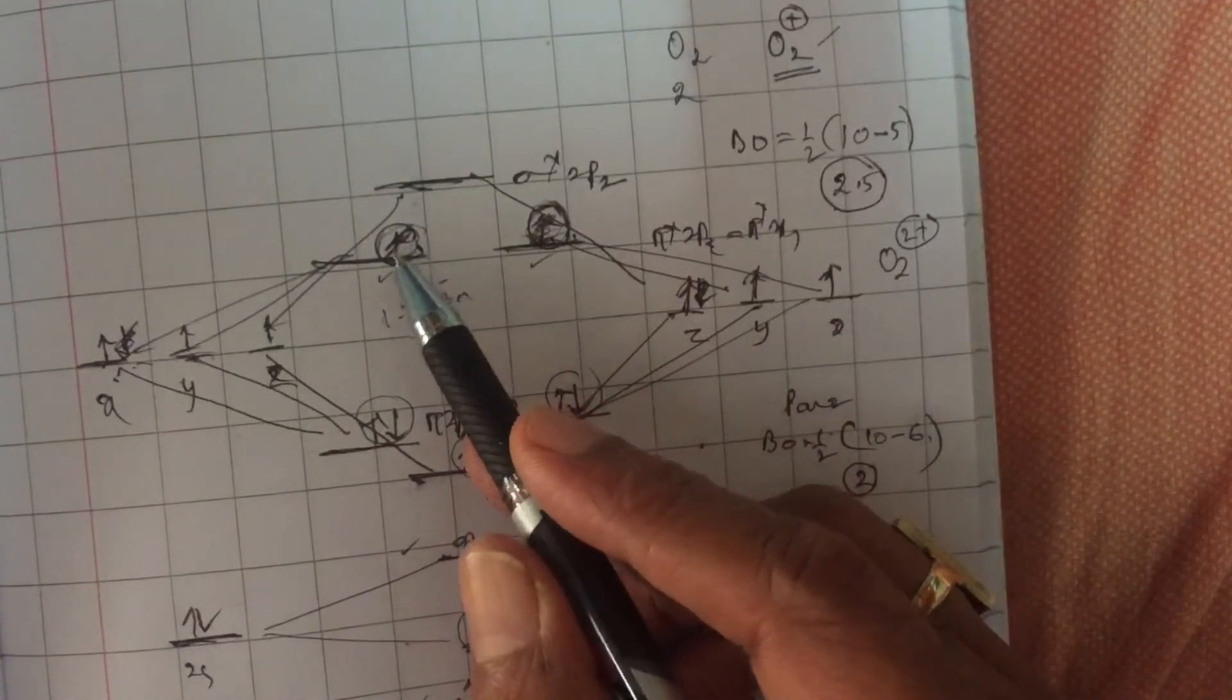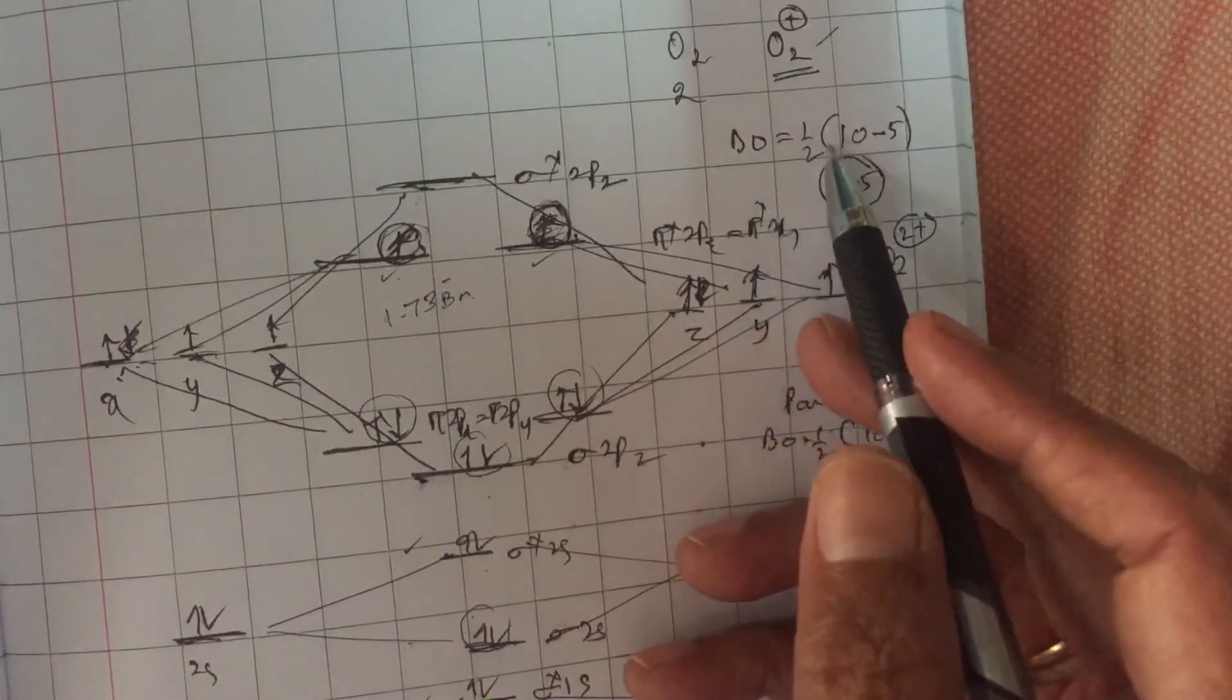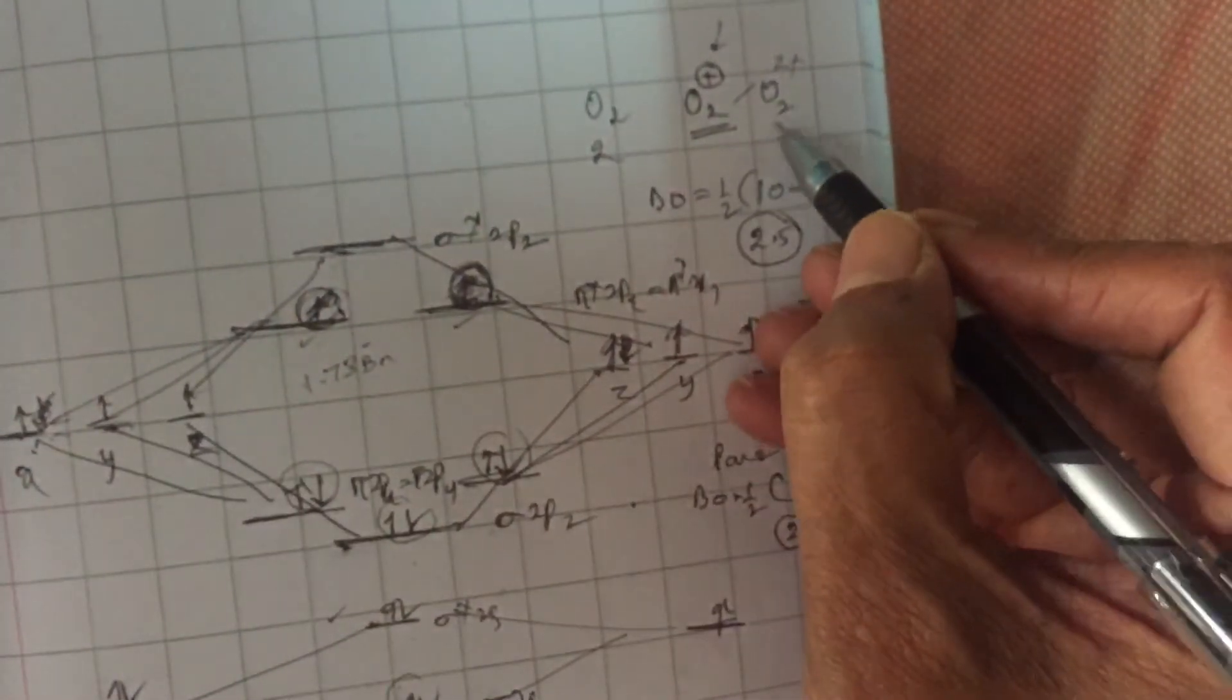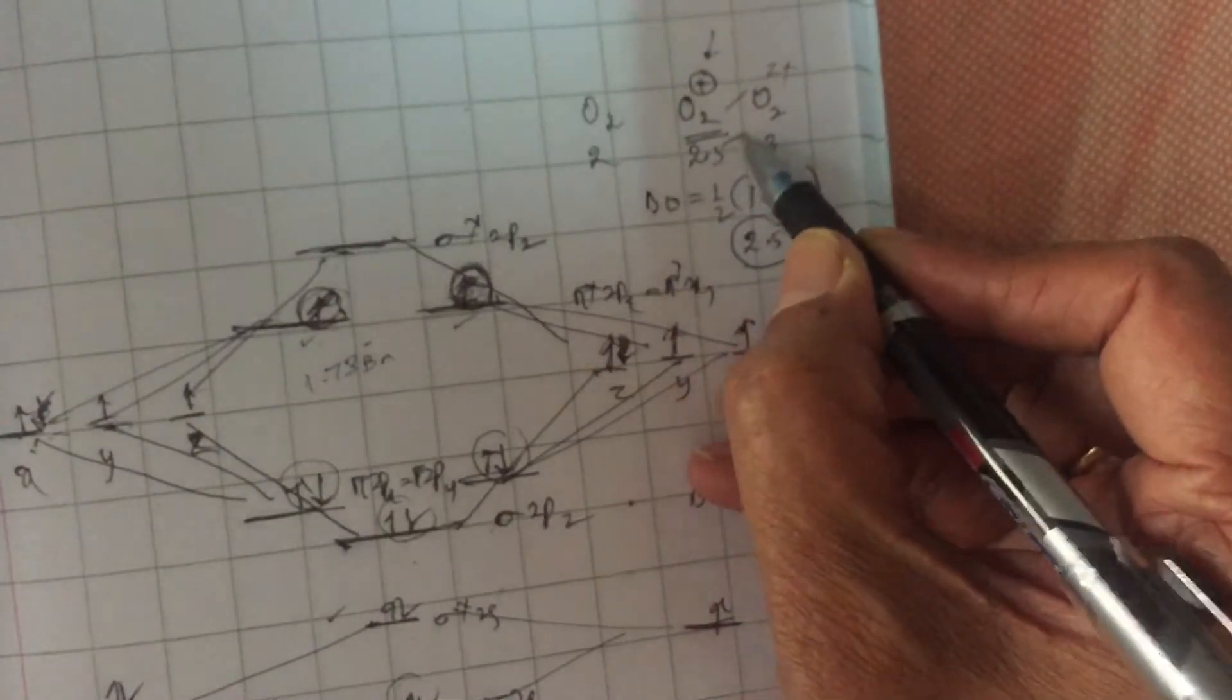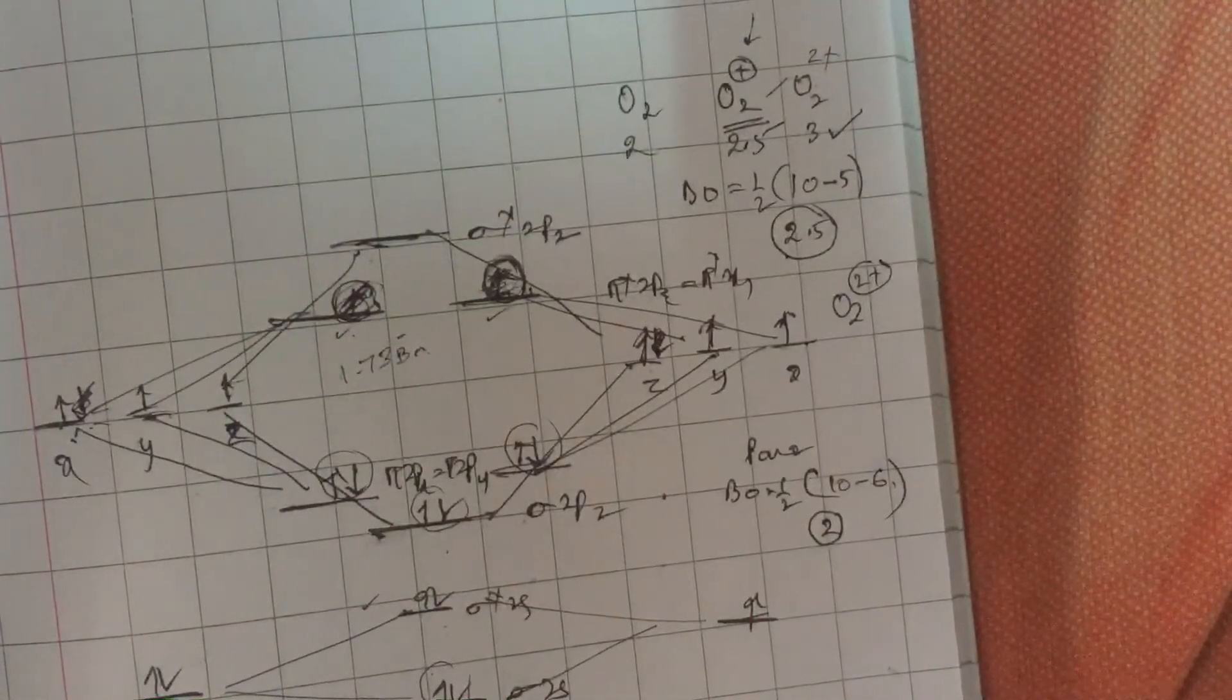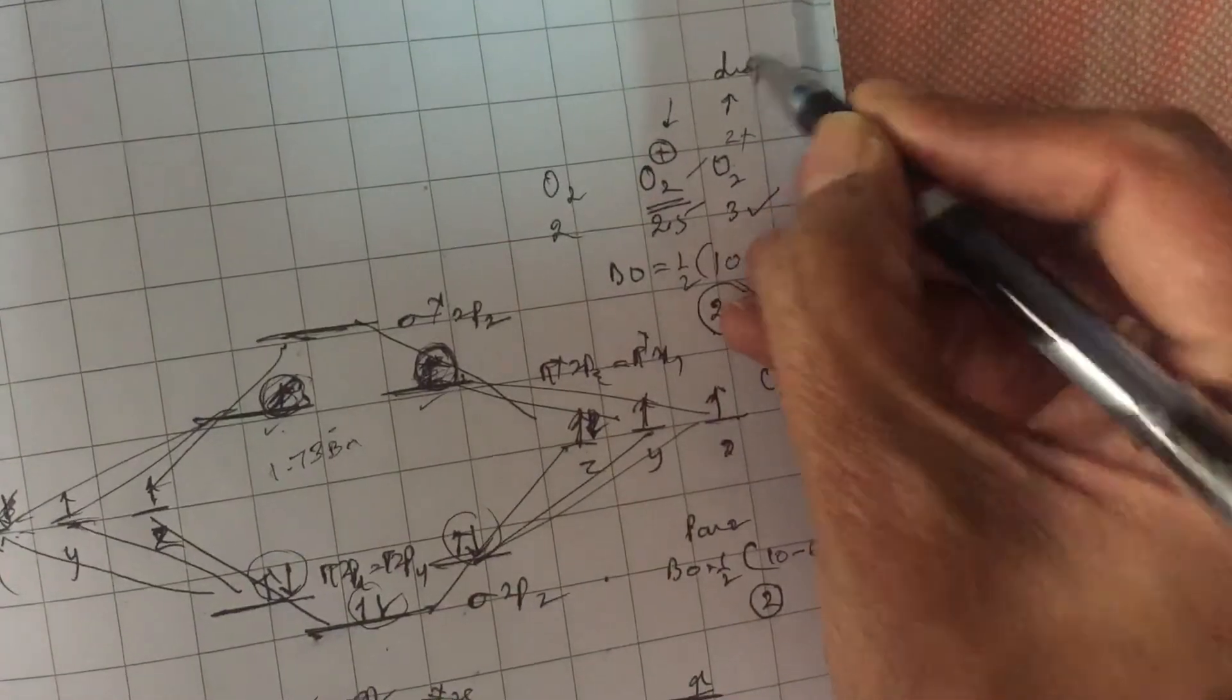As a result, the number of electrons in anti-bonding molecular orbitals further decreased, due to which you can see that the bond order will become half into 10 minus 4. Therefore, that is in O2²⁺, bond order becomes 3. In O2⁺ bond order was 2.5, whereas in O2²⁺ bond order was 3. And in O2²⁺, there are no unpaired electrons in the molecular orbitals. Therefore, this O2²⁺ is diamagnetic. It is repelled by external magnetic field.